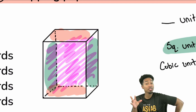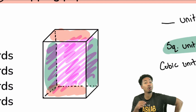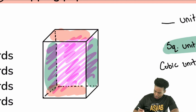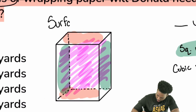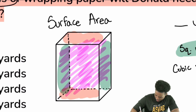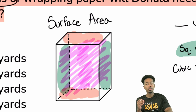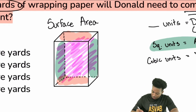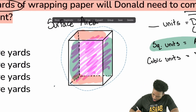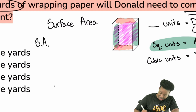So the math idea we're talking about is called surface area. Write this down: surface area. We're trying to find the surface area. Now I'm going to give you the formula for surface area and also explain how it works.